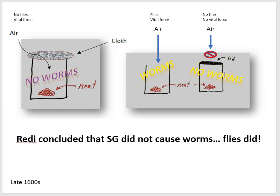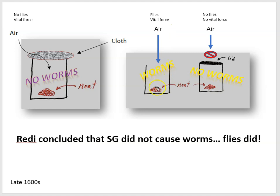But we have a problem. The jar lid is blocking the flies from getting to the meat, but it's also preventing fresh air from getting to the meat. So the spontaneous generation crowd could say you get no worms here because the vital force didn't reach the meat, and you do get worms in the open jar because the vital force did.